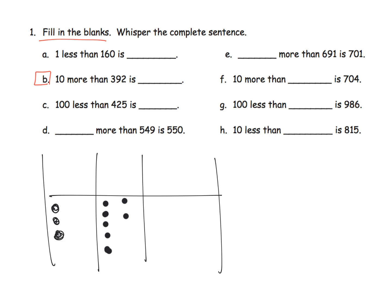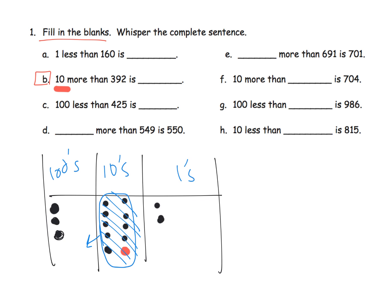What does 392 look like? It looks like this — one, two, three, four, five, six, seven, eight, nine — there are our three hundreds, then 92. If we added 10 more, we put one more dot, and then we have to cash things in, because any time you have 10 of one value you can cash it in for the next column. We have 10 tens here, so we cash those in and get 100. So 10 more than 392 becomes 402.